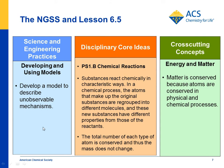A close look at the foundation boxes: for science and engineering practices, students develop a model — the chemical equation is a model to describe an unobserved mechanism. The disciplinary core idea is that substances react chemically in characteristic ways, specifically that hydrogen peroxide interacts with a catalyst and decomposes into water and oxygen gas, and the total number and type of atoms is conserved. The cross-cutting concept is that matter is conserved because atoms are conserved in physical and chemical processes — in this case, a chemical process.